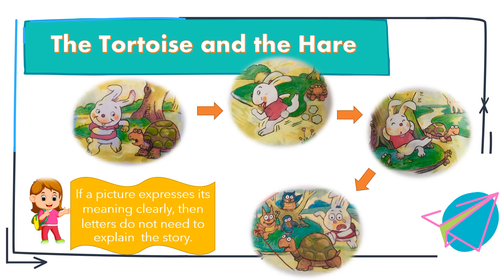So the picture diagram about the tortoise and the hare tells the story and shows important information that you need to know. If a picture expresses its meaning clearly, then letters do not need to explain the story. I hope you understand about picture diagram — it is a picture that tells the story or shows important information. That's all for today. Thank you!